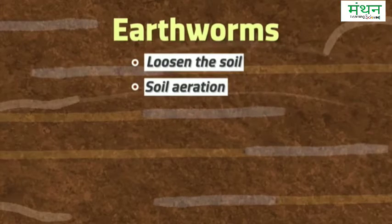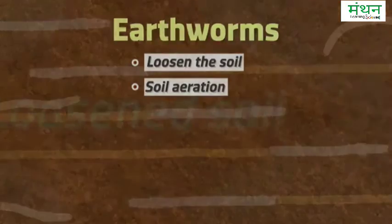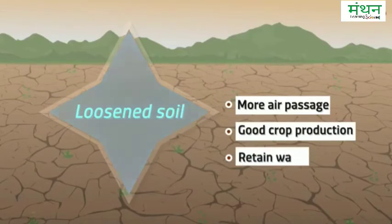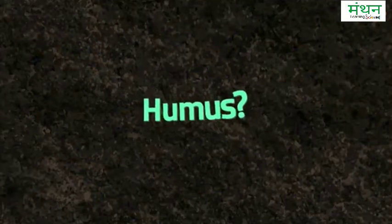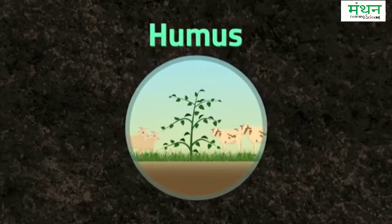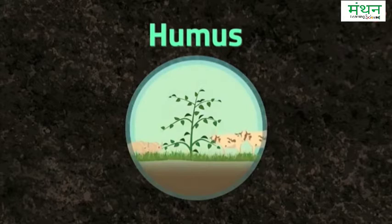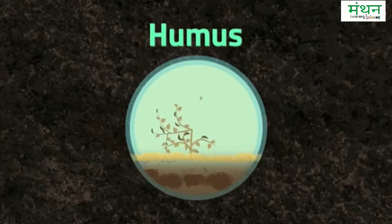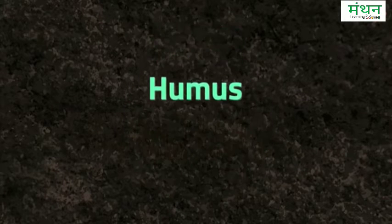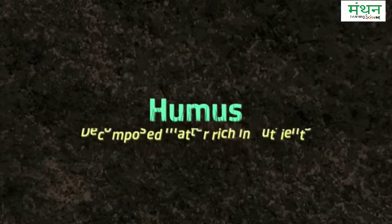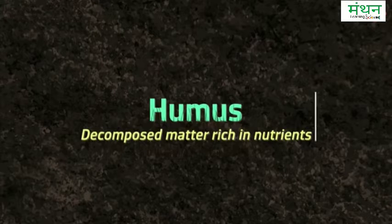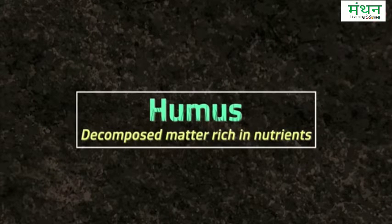Another advantage of loosening the soil is that it helps the soil retain water. This leads to the growth of favourable microbes that help produce humus in the soil. What exactly is humus? As we know, all living things die, their remains are decomposed, and nutrients are returned back to the soil. The microbes help in this process of decomposition. This decomposed matter is rich in nutrients and is known as humus — it is what plants depend on for nutrition.